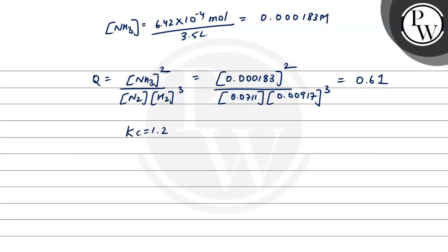Now Kc was given as 1.2. So clearly, Qc is less than Kc. That means the reaction will proceed in the forward direction.